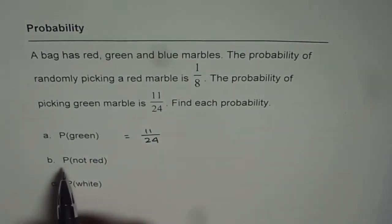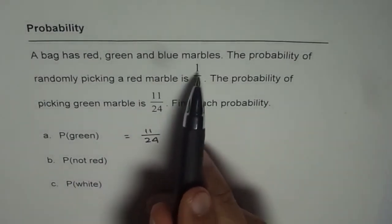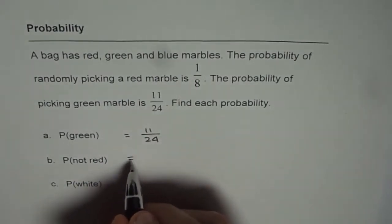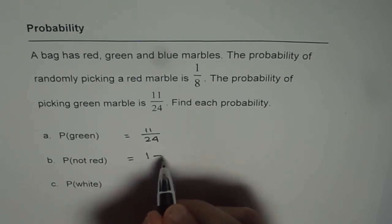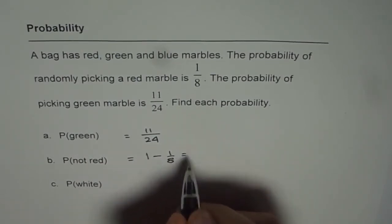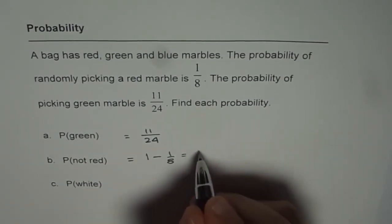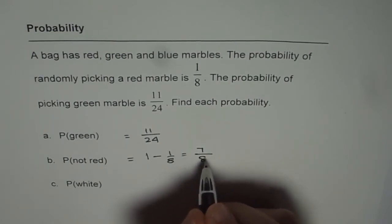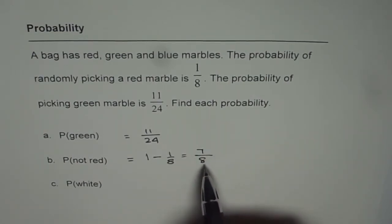Then we have the probability of not red. The probability of picking red is 1 out of 8, so not red will be 1 minus 1 out of 8, which equals 7 out of 8. So 7 out of 8 is the chance we are not going to pick red.